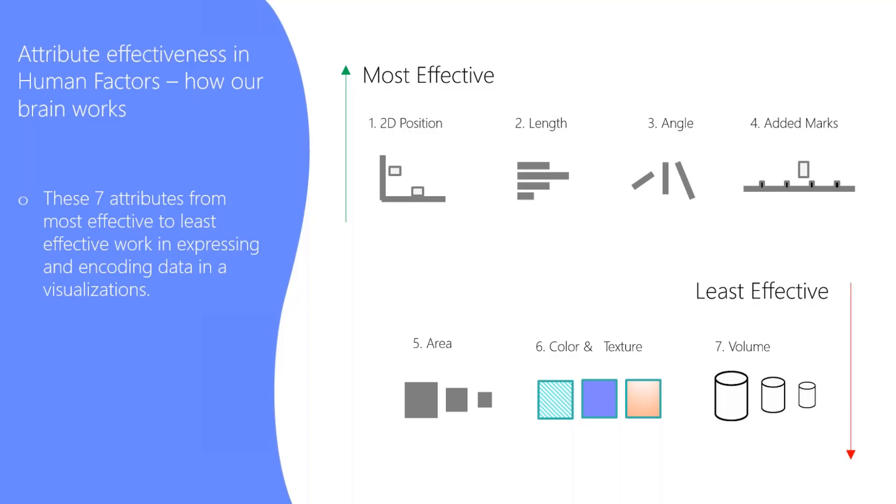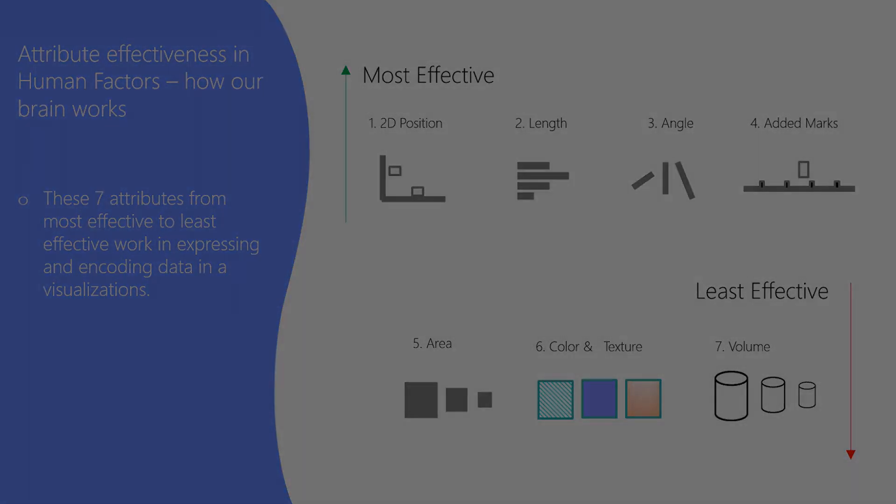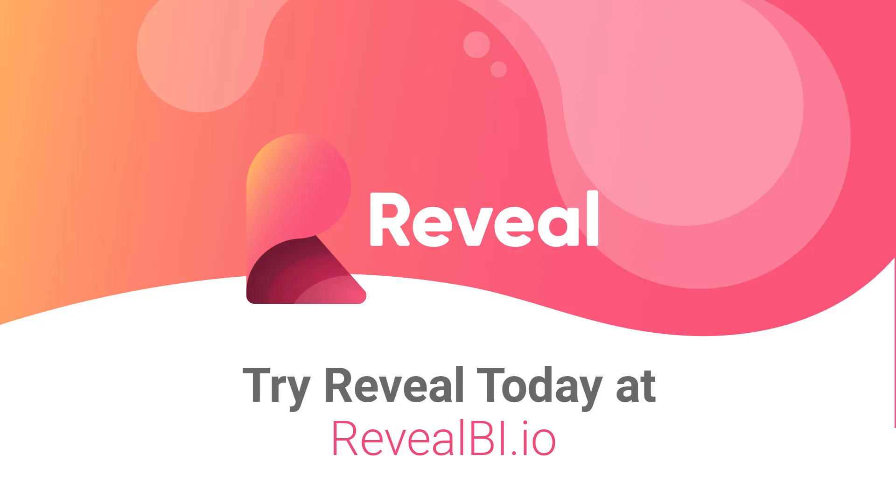So if you want to be successful, use some of the signal techniques we talked about earlier, and then look at these four ways of representing your visualizations, either through 2D position, length, angle, or added marks.